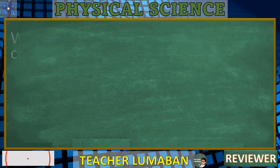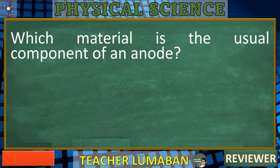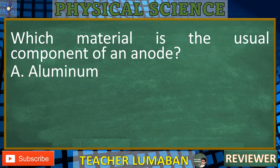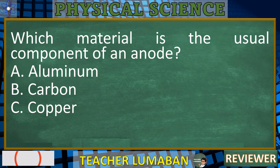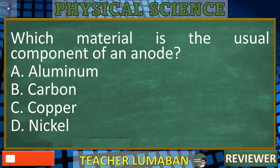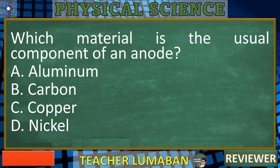Which material is the usual component of an anode? A. Aluminum. B. Carbon. C. Copper. D. Nickel. In the next 5 seconds, select the best response from the available options.